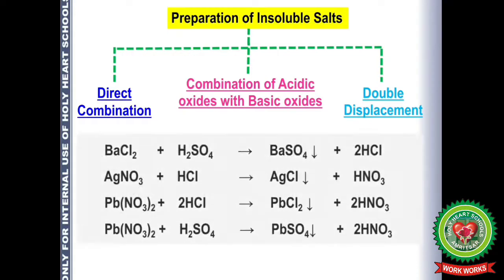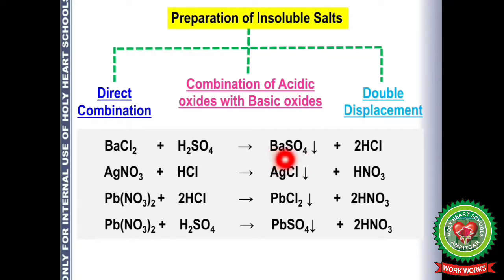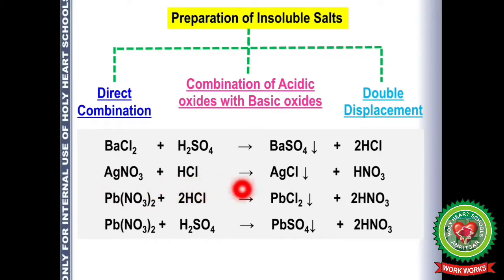The third method is double displacement, also known as precipitation reactions. When an insoluble solid is formed in a reaction, it is precipitated out. For example, barium chloride + sulfuric acid → barium sulfate (white precipitate) + HCl. Also, silver nitrate + HCl → silver chloride (white precipitate) + nitric acid. Remember this — it is a very important reaction that appears in exams every time.